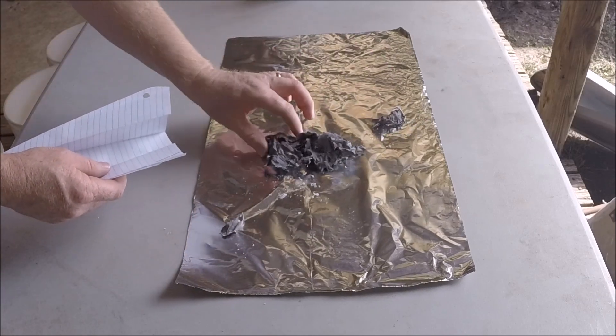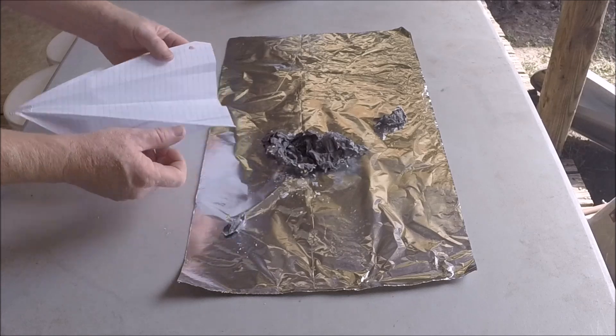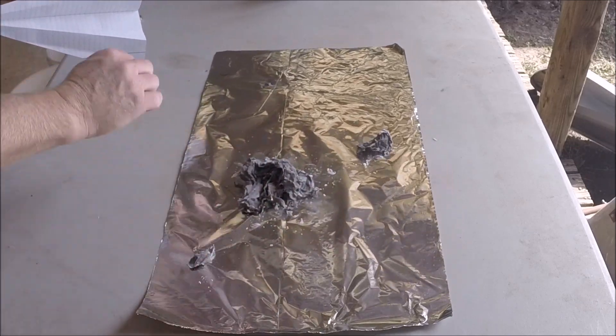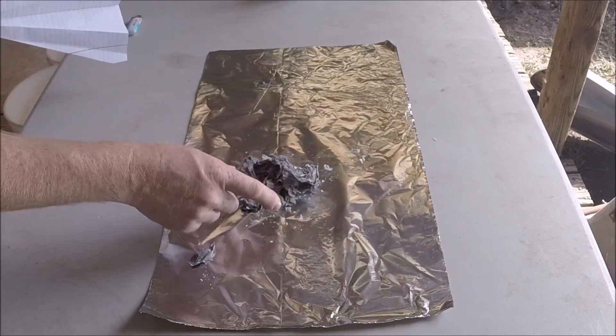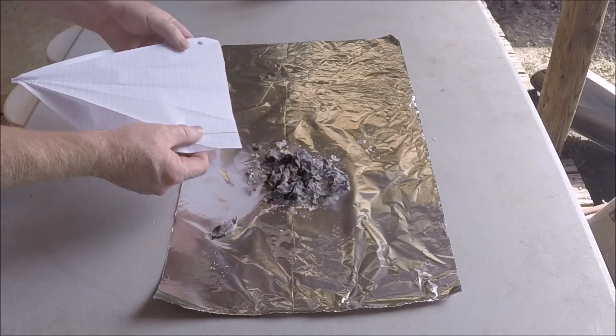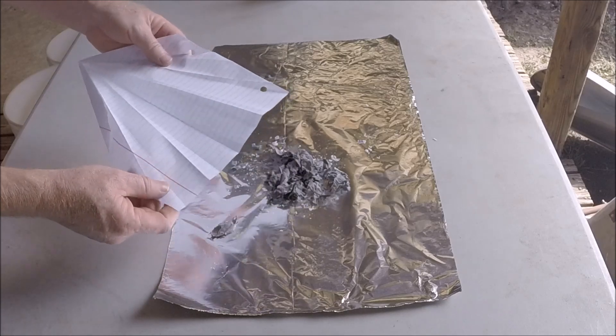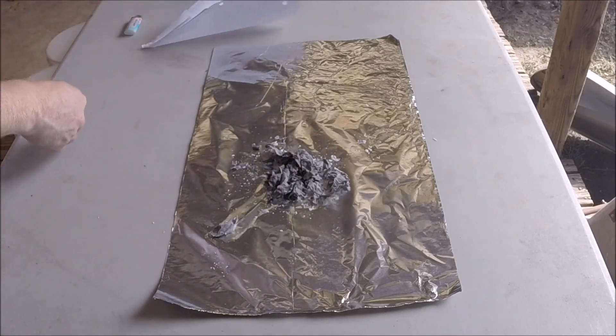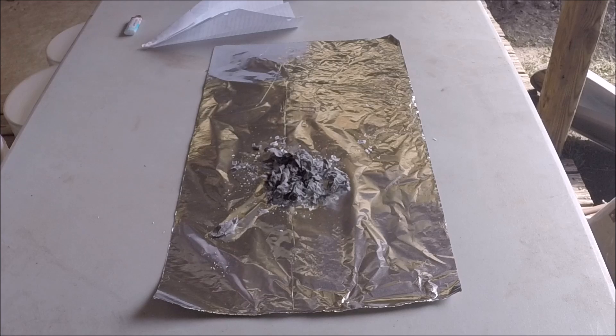We changed it completely, and the biggest indicator that this underwent a chemical change, I can't unburn it. I cannot change this new substance back into notebook paper. So burning is an example of a chemical change.